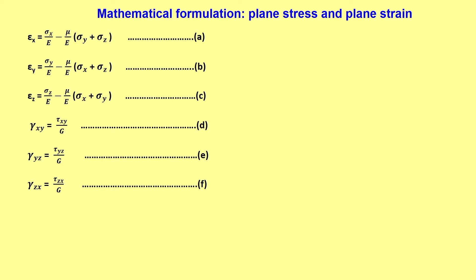One can also represent gamma_xy in terms of the pure shear strain or tensorial shear strain, denoted epsilon_xy. The relationship is: twice epsilon_xy equals gamma_xy, so gamma_xy is 2 epsilon_xy. One can replace gamma_xy with this, and in that case epsilon_xy is equal to tau_xy by 2G — that is the difference.